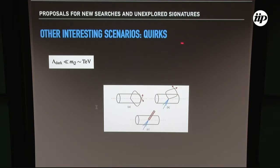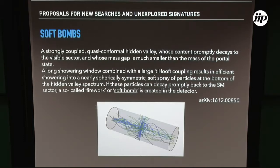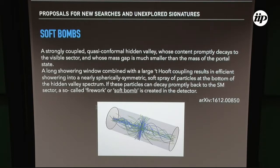We can also have what the literature calls soft bombs. It's always a hidden valley model, just that in this case the hidden QCD is almost conformal — practically conformal but with a mass gap. This means the dark quarks decay promptly, and since the decay is mediated by something heavy, they decay with an almost spherical shape — really like a firework in the detector. You produce, decay promptly, start to produce a lot of objects with almost spherical symmetry. The typical signature would be this really messy event.